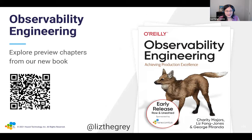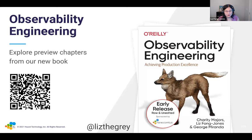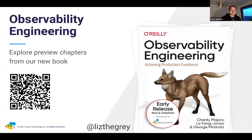I do want to point out that I have a book coming out called Observability Engineering, authored by myself, Charity Majors, and George Miranda. You can visit the link from the QR code on your screen right now to get a free copy of the book — it's basically a fully finished manuscript — and it will also be in print in May, which I'm really excited about. With that, let's go ahead and turn to questions.